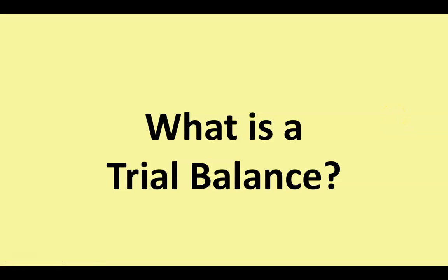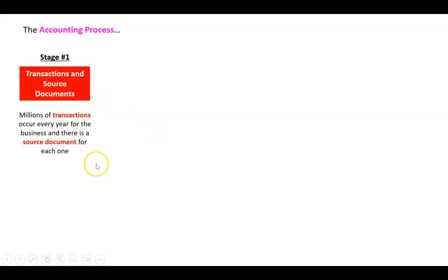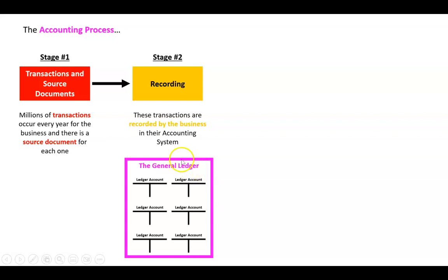The last stage in our whole ledger and debit and credit process is something called a trial balance. Let's look at our accounting process. Stage one: transactions happen every day and there are source documents for those. Stage two: those transactions need to be recorded in the accounting system — that particular place is called the general ledger, which is just a series of T-accounts.